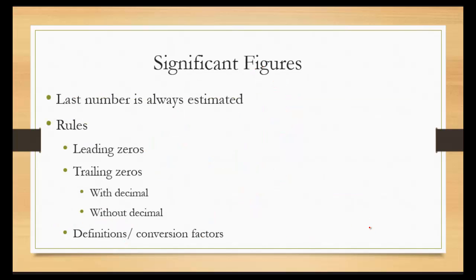Alright, for significant figures. The last number in a measurement is always estimated. So if I say 1.23, that 1 and 2 is known, that 3 is estimated. So here are the rules for determining what numbers are significant and what numbers aren't. They typically come down to the zeros. Leading zeros are never significant. So there's only two significant figures here.